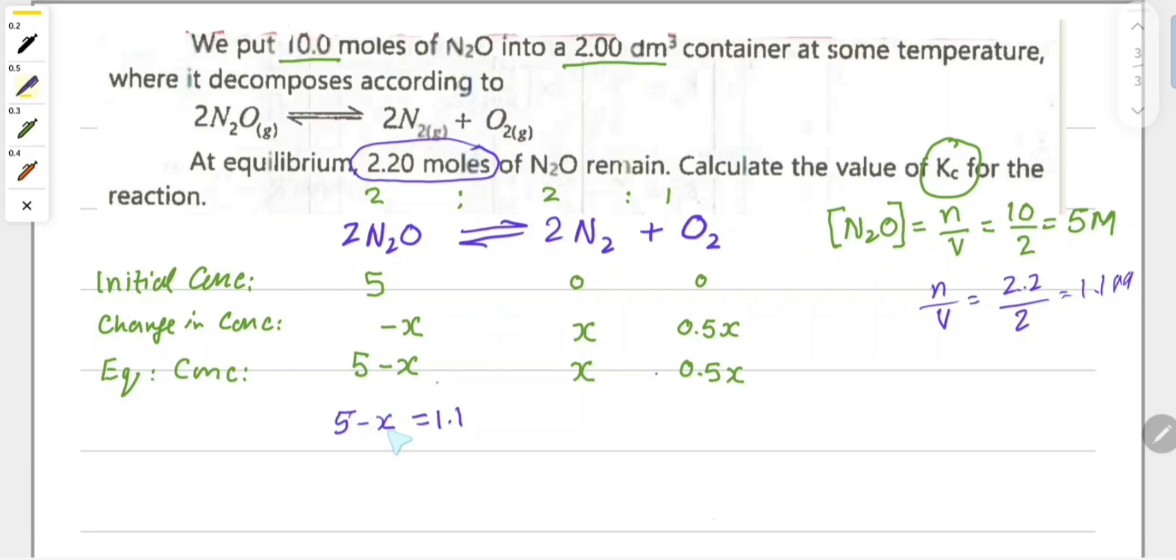We need to find the value of x. From 5 minus x equals 1.1 molar, moving minus x to the right gives plus x, and 1.1 moves to the left. So 5 minus 1.1 equals x. This gives x equals 3.9.